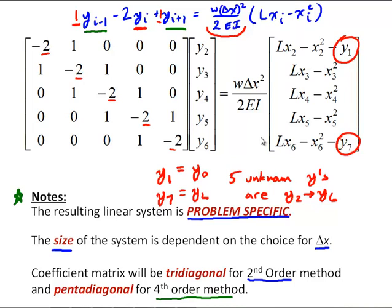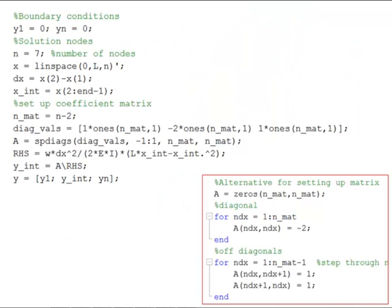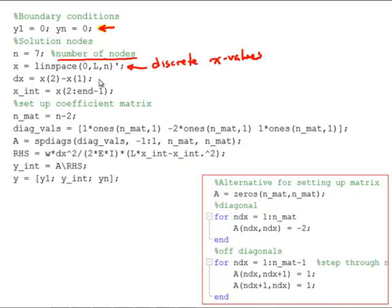Now let's look at the MATLAB code. You'll need to do quite a bit of work by hand to derive the matrix before working in MATLAB for this method. We've got our boundary conditions defined. The setup uses the number of nodes to set delta x, then defines the discrete x values and finds delta x from that. We also get our x values for the internal nodes, since we know the y values at the boundaries from the boundary conditions.